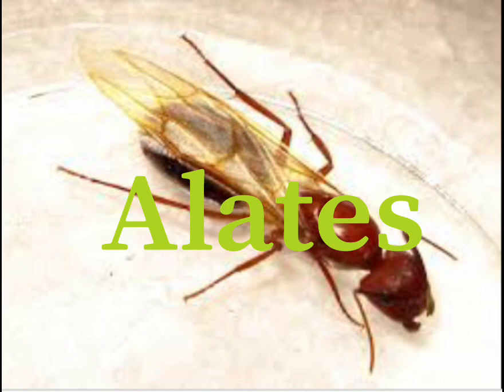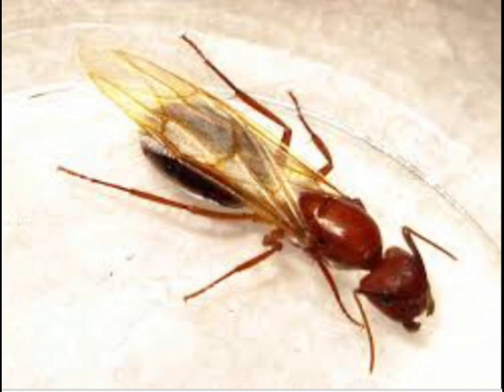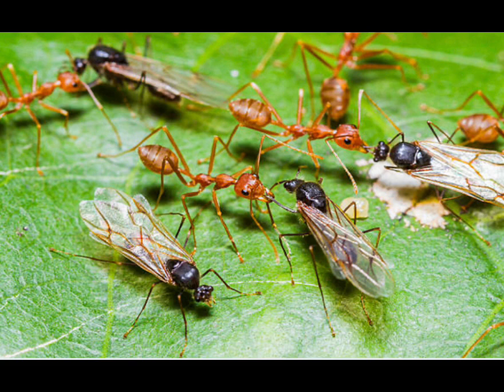This is a female elate, also known as a virgin queen ant. Usually, colonies only start producing elates when they are mature, so probably around their second or third year. The male and female elates do nothing within the nest that is beneficial — they take up space and consume resources. So if the elates weren't there, the colony could produce more workers, although elates are crucial to the survival of the species as without them there'd be no new colonies being produced.